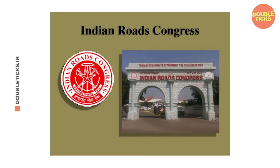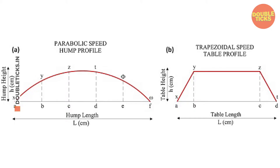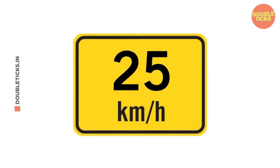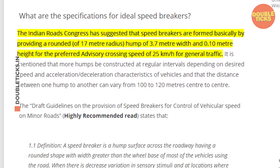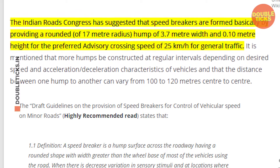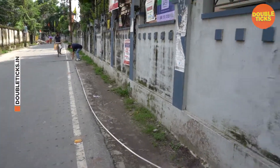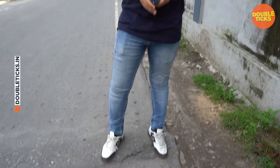Let me share the specifications of an ideal speedbreaker. The Indian Road Congress suggests that speedbreakers are formed by providing a rounded hump of 3.7 meter width and 0.10 meter height, for a preferred advisory crossing speed of 25 km/h for general traffic. Multiple humps should be constructed at regular intervals depending on desired speed, acceleration, deceleration, and vehicle characteristics, with the distance between one hump to another varying from 100 to 120 meters center to center.